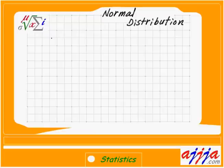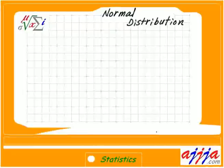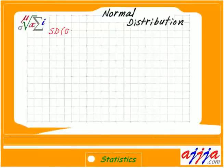Normal distribution — sounds like natural things going on here. We're talking about the whole population, not a selected few items.